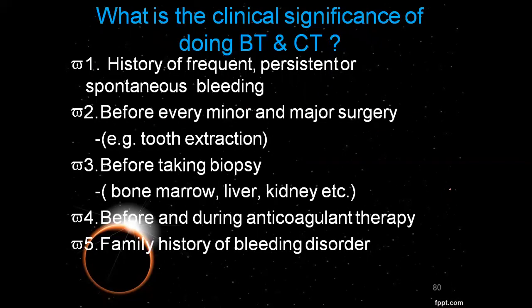The significance of BT and CT — bleeding time and clotting time — is important. We check spontaneous bleeding history before every minor and major procedure. We check it, specifically, for issues from the bone marrow, liver, or kidney. If we have normal bleeding time or clotting time, we can investigate for internal bleeding causes. These tests are also used before and during anticoagulant therapy and when there is a family history of bleeding disorders.